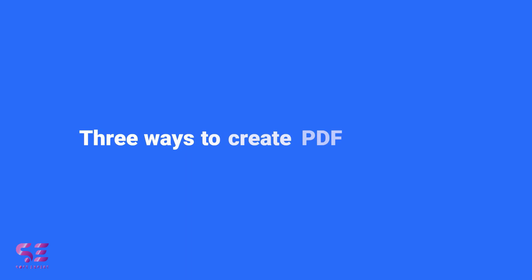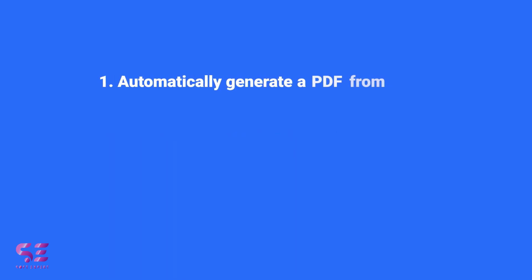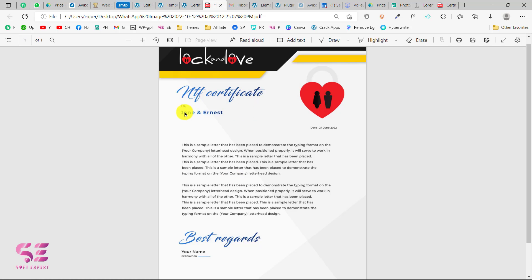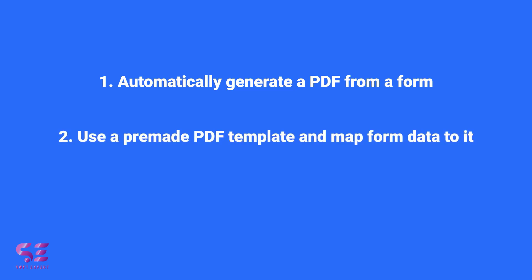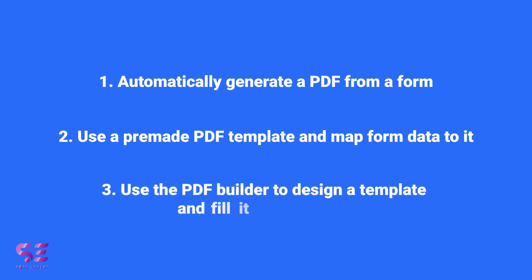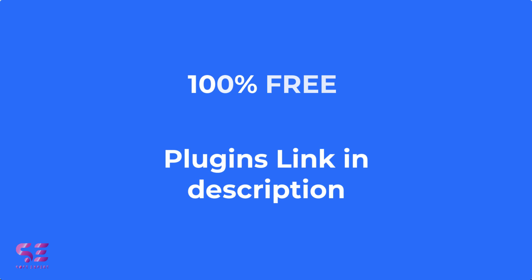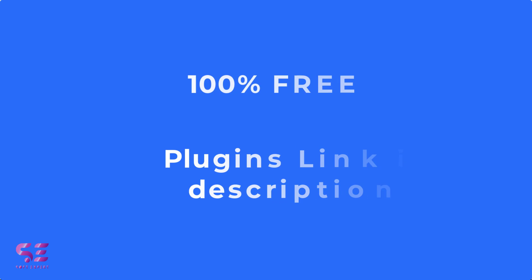And there are three ways we can create these templates. One is to automatically generate a PDF from a form. The second one is to use a ready-made PDF template and map data on it, which is the most common one. The third one is to use the built-in PDF builder and fill it with the form data. I'll show you all the methods and we are doing these absolutely for free, so you don't have to buy any premium plugin.